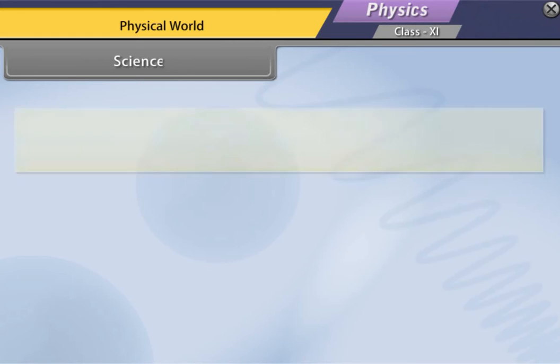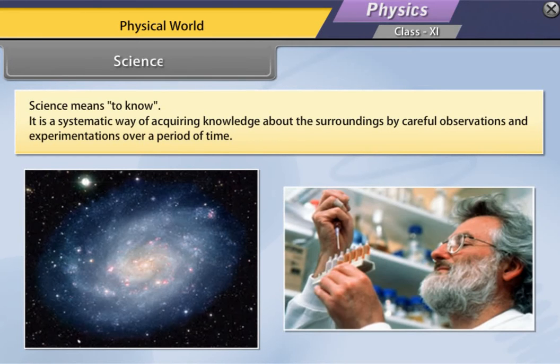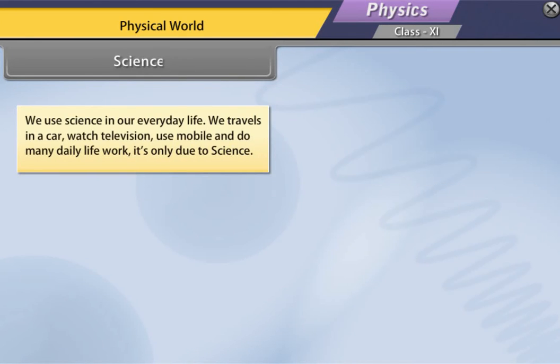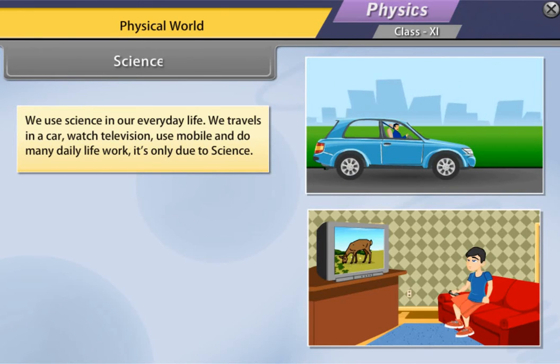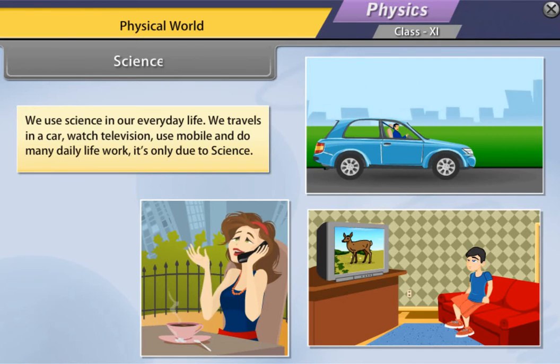Science. Science means to know. It is a systematic way of acquiring knowledge about the surroundings by careful observations and experimentations over a period of time. We use science in our everyday life. We travel in car, watch television, use mobile and do many daily life work. It is only due to science.